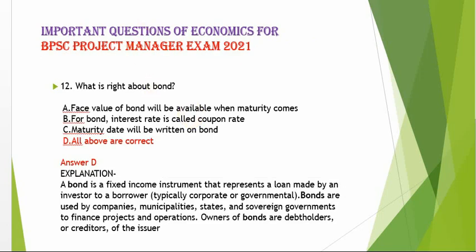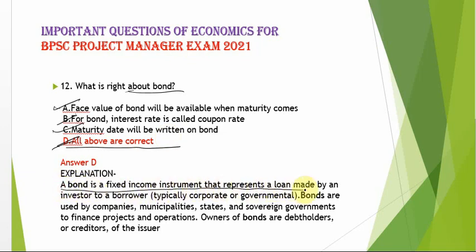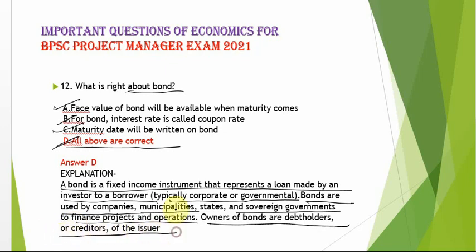What is right about a bond? A bond is a fixed income instrument representing a loan made by investors to a borrower, typically corporate or governmental. Three correct statements: the face value of the bond is available when maturity comes; the interest rate for a bond is called the coupon rate; and the maturity date is written on the bond. All options A, B, C are correct, so option D (all above) is the correct answer.